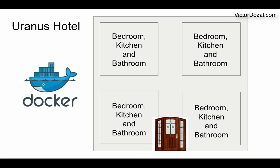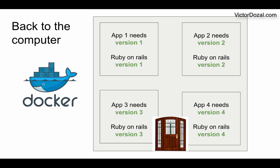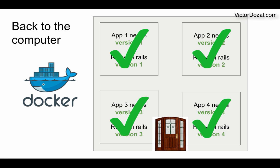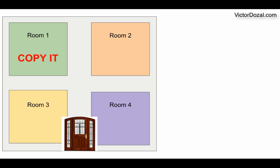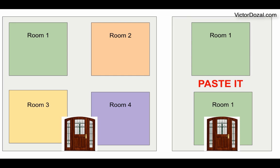And since every room has a kitchen and bathroom, we can destroy the shared kitchen and bathroom, and then build another room. On a computer, this would mean that every application would have the right version of Ruby on Rails within its own little space. Another great benefit of Docker is that you can grab any of the hotel rooms, copy it, and paste it into any other hotel as many times as you want, and it will work just the same — in a very inexpensive way.